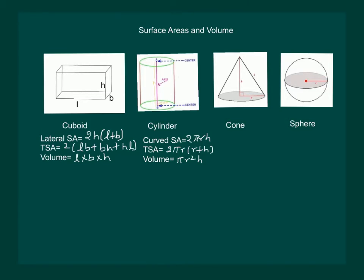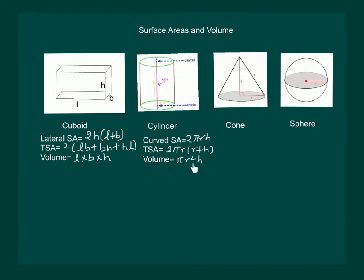Curved surface area of a right circular cylinder is given by 2πRH, where R is the radius of the base and H is the height of the cylinder. Total surface area is 2πR into R plus H, and volume is πR²H.